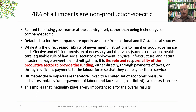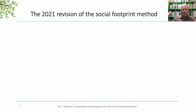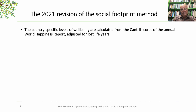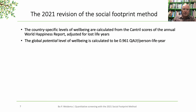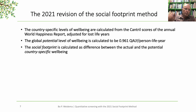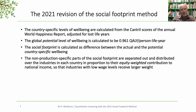This implies that inequality plays a very important role for the overall results. So in the 2021 revision of the Social Footprint Method, the country-specific levels of well-being are calculated from the Cantrell scores of the annual World Happiness Report, adjusted for lost life years. The global potential level of well-being is calculated to be 0.961 QALYs per person life year — not quite the one QALY that could be the theoretical maximum. The social footprint is calculated as the difference between the actual and the potential country-specific well-being. The non-production-specific parts of the social footprint are separated out and distributed over industries in each country in proportion to their equity-weighted contribution to national income, so that industries with low wage levels receive a higher weight.